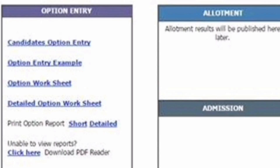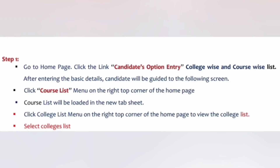This is what you have to create — on the right side you get the allotment and admission tab. Step one: go to the home page and there you will get the candidates option entry. Within that, you will see college-wise and course-wise lists. Two important things: first you have to see the college list, then only you can select the college, which I mentioned in column 1, and then the course list mentioned in column 2, as shown in the 8 option entries example.